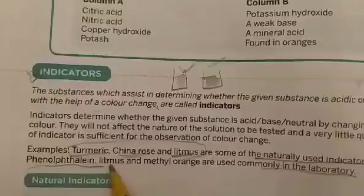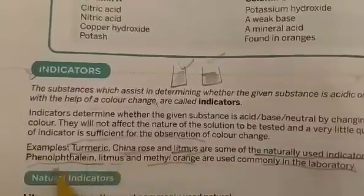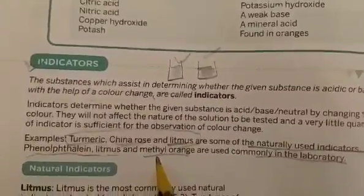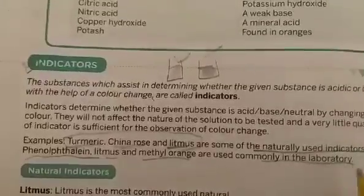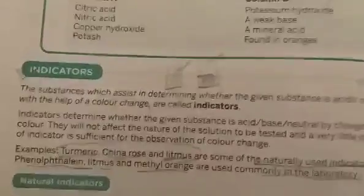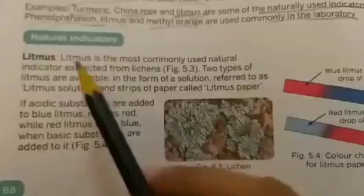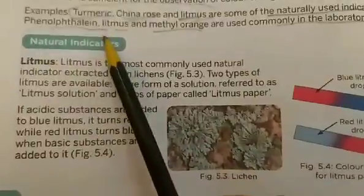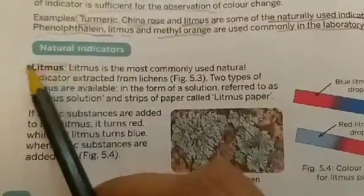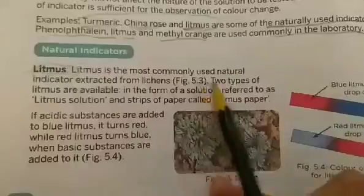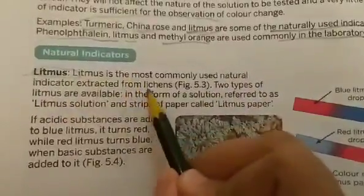Phenolphthalein, litmus, and methyl orange — these three are the indicators used only in the laboratory for chemical purposes. So let's talk about natural indicators first. The first example is litmus. Litmus is the most commonly used natural indicator, extracted from lichens.